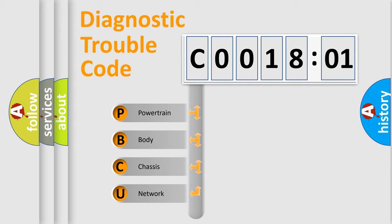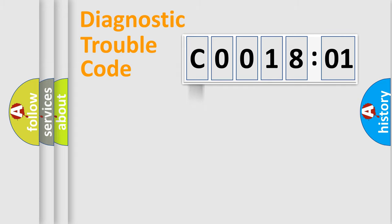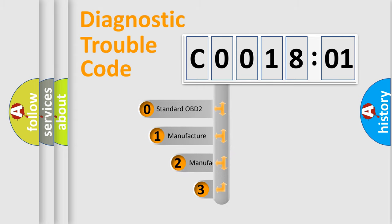We divide the electric system of an automobile into four basic units: Powertrain, Body, Chassis, and Network. This distribution is defined in the first character code.